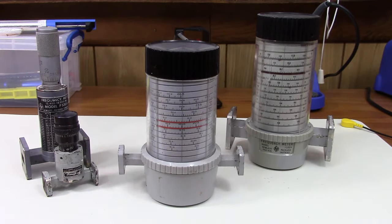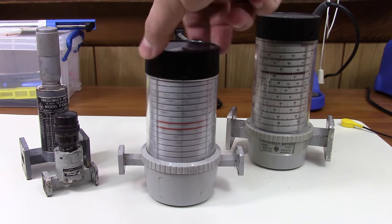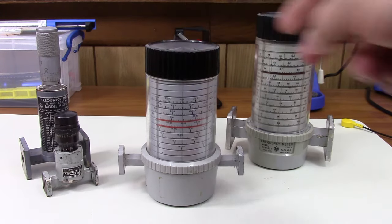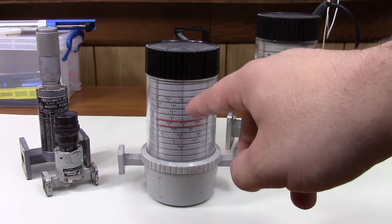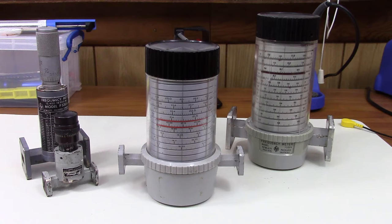So how do these frequency meters work? Well the principle is actually quite simple. They are basically tuned cavities, and as you change this knob up here you're changing the resonance frequency of the cavity inside and you're also spinning around the scale on which you will be able to read that resonance frequency.